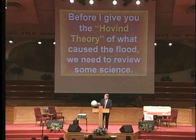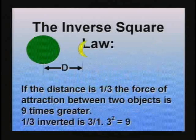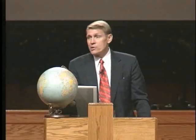I'm going to give you the Hovind theory of what caused all these phenomena, but I need to review a little science first. The inverse square law tells us that if two objects are attracted to each other, like the earth and the moon, the force of attraction is inversely proportional to the square of the distance between them. In English: if you bring the moon to one-third of the distance, you flip it and square it — it's now nine times the gravitational pull. Inverse square laws apply to gravity, light, and magnetism.